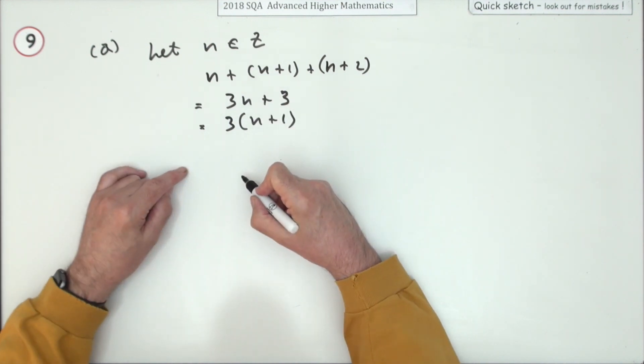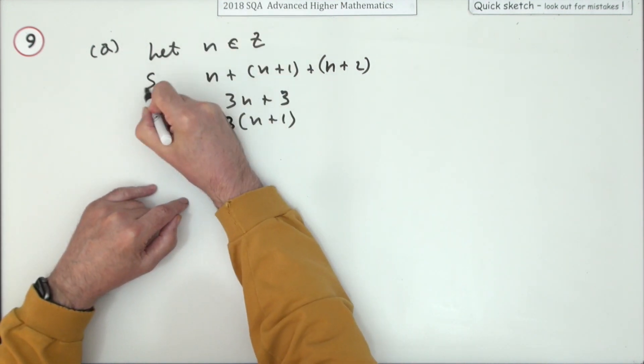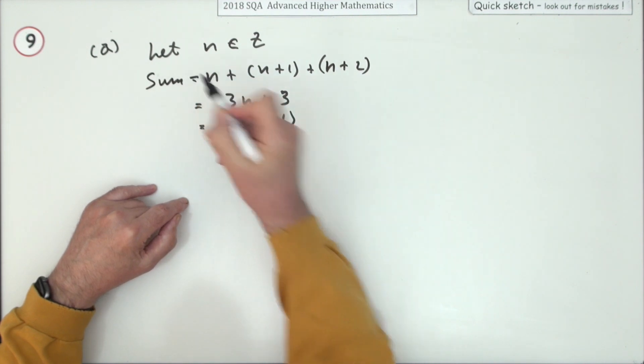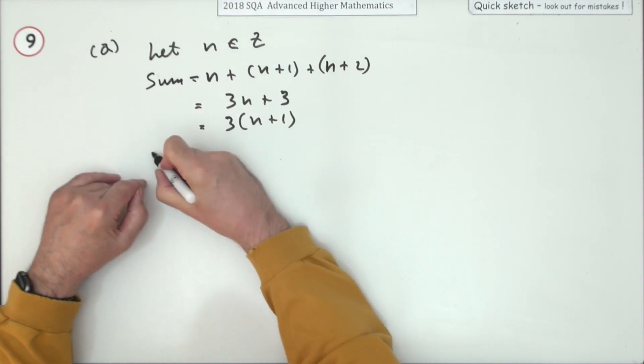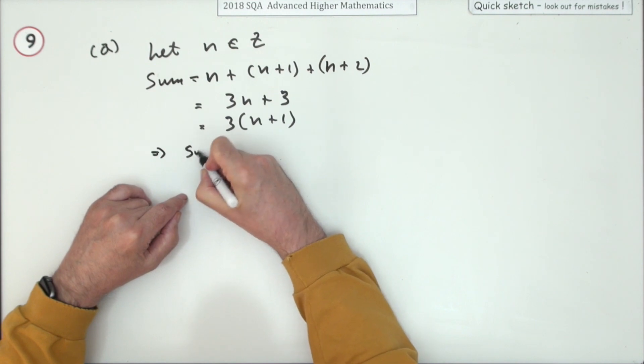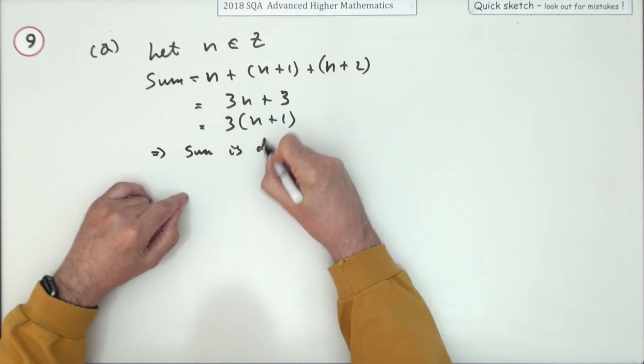We should have put a name here to begin with. Just call that the sum. The sum would be that, so I can say this now: that means that the sum is divisible by three because it's three times something.